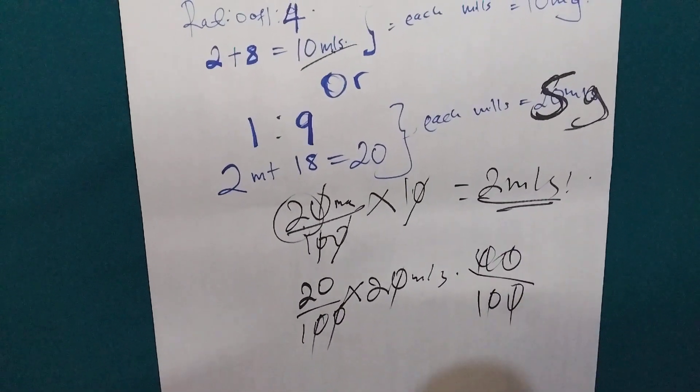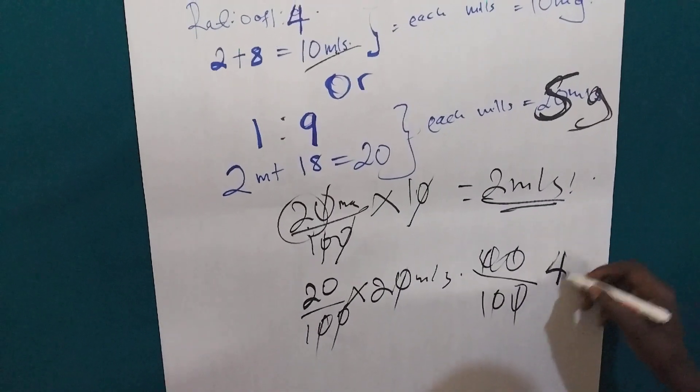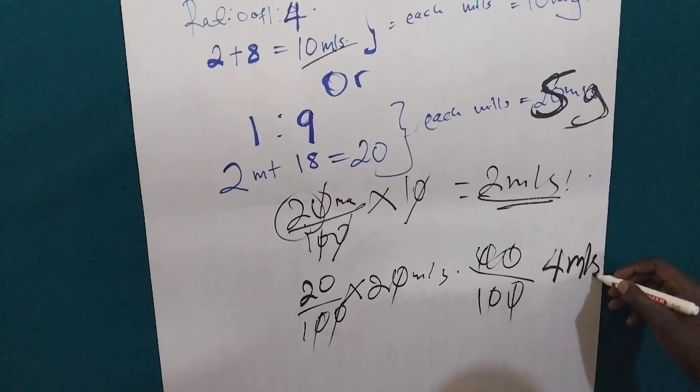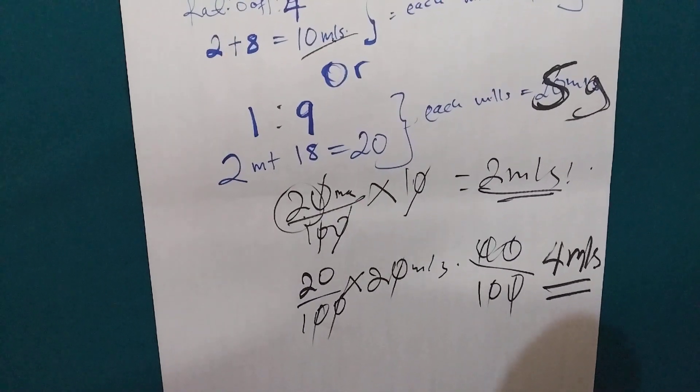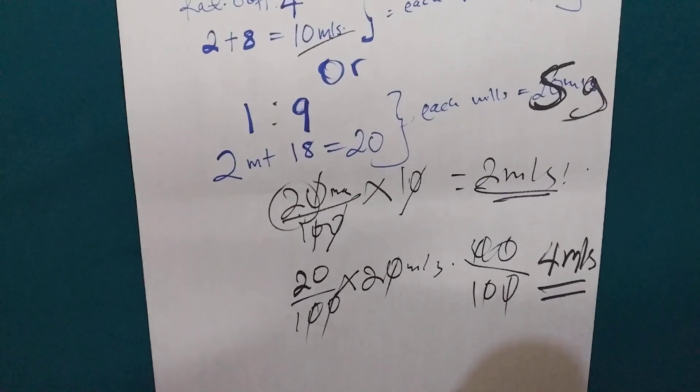So, for this dilution we will aspirate 4 mL and give it to the child.